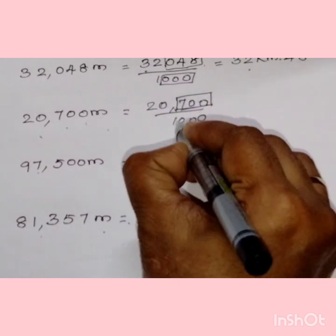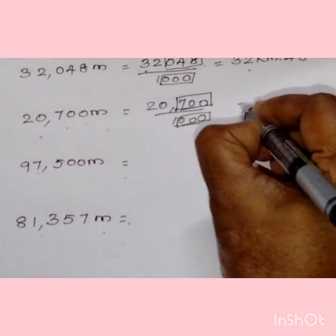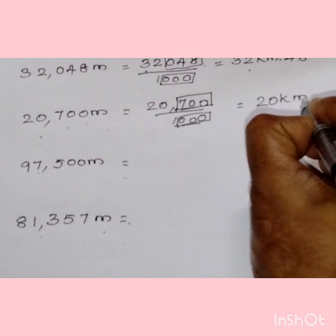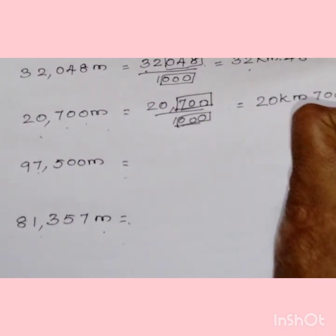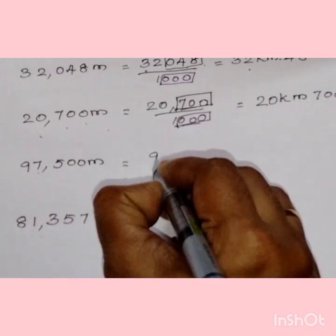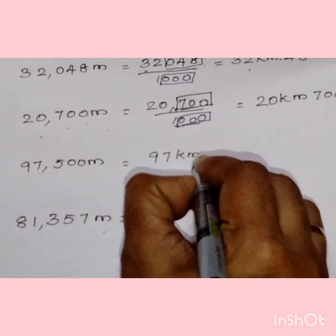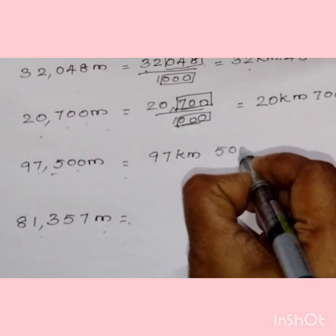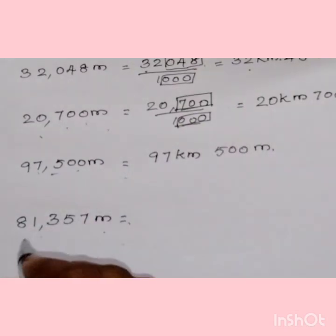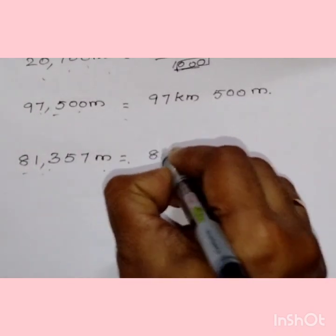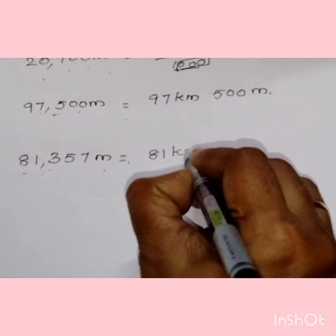Continuing with more examples: 97,500 meters becomes 97 kilometers and 500 meters. Similarly, 81 kilometers — the last three digits become the meters. Just remember this trick when dividing by 1000: the last three digits become the meters remainder.